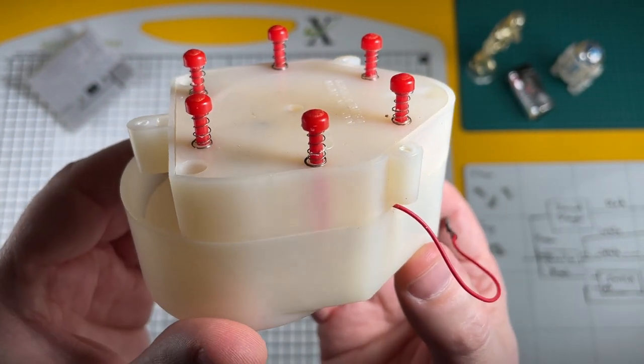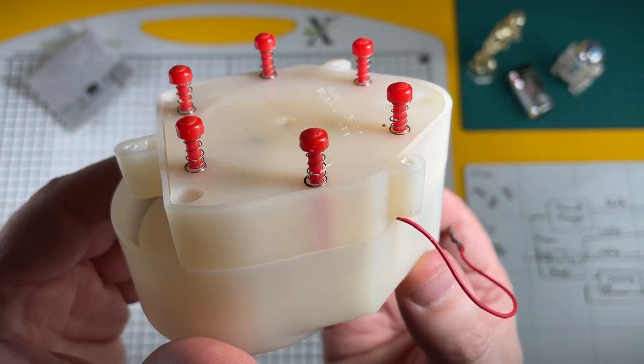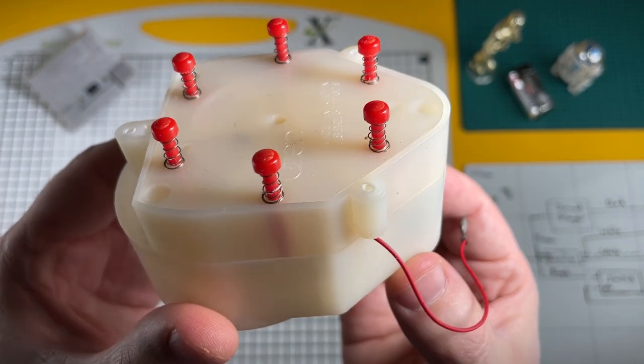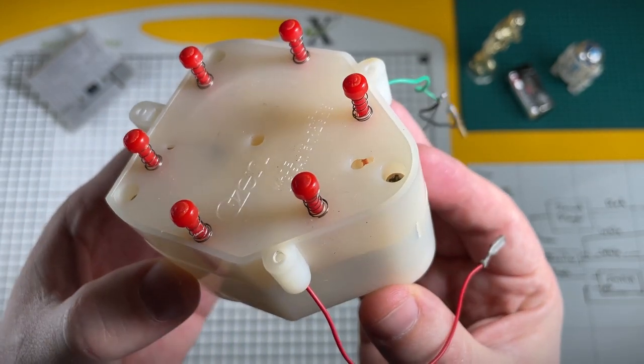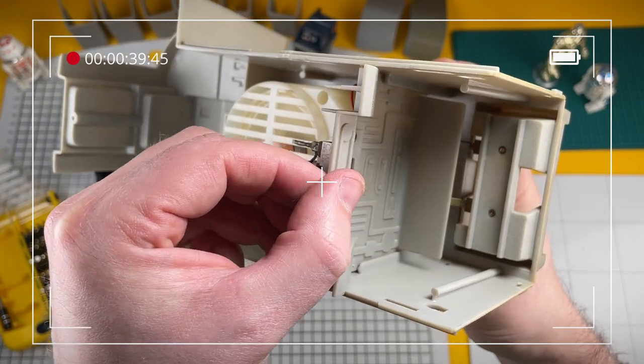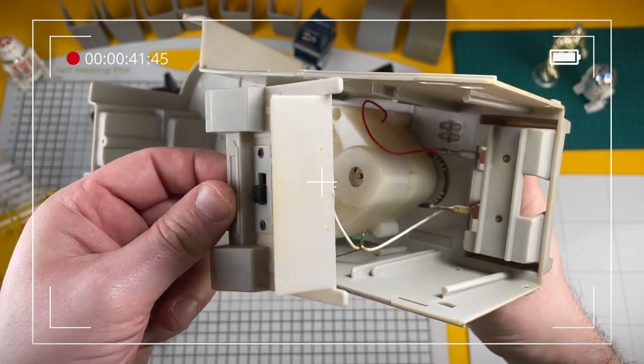Today we're going to do a full strip down and restoration of this record player, the voice box from the vintage Star Wars Imperial Troop Transporter. This is part two of what I think is going to be a three-part full restoration.